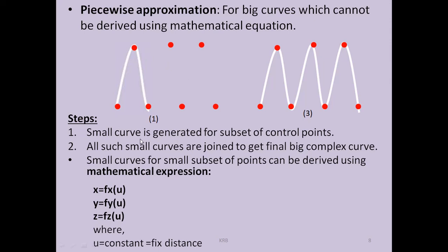The steps are: a small curve is generated for a subset of control points, as shown in figure 1, by joining a few sample points. All small curves are joined to get the final big complex curve, as shown in figure 3. We can generate each small curve using mathematical expressions: to find point (x, y, z) we use functions x(u), y(u), and z(u), where u is the step size — the fixed length from the current point to the next position on the curve.